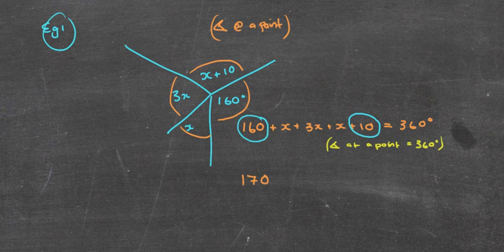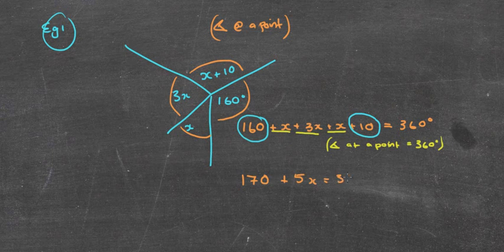What other like terms do we have there? Well, we have this plus x plus 3x plus x. Well, we've got 1x plus 3x, which is 4x, plus another x, which makes it 5x. And I'll put that there, plus 5x equals 360 degrees. So now I've got a fairly nice equation, which we've been able to solve before.